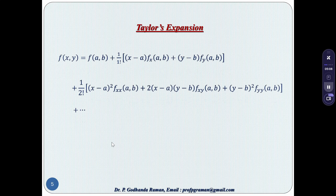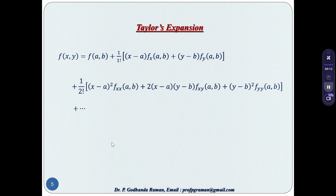Taylor's expansion: f(x, y) equals f(a, b) plus (1/1!) [(x−a)fx + (y−b)fy], where fx is the partial derivative with respect to x and fy with respect to y — this is the first degree term. The second degree term is (1/2!) [(x−a)² fxx + 2(x−a)(y−b)fxy + (y−b)² fyy], where fxx is fx differentiated with respect to x, fxy is fy differentiated with respect to x, and fyy is fy differentiated with respect to y.